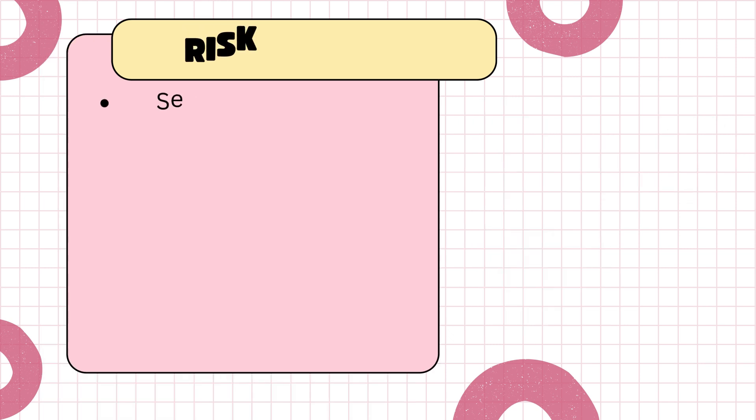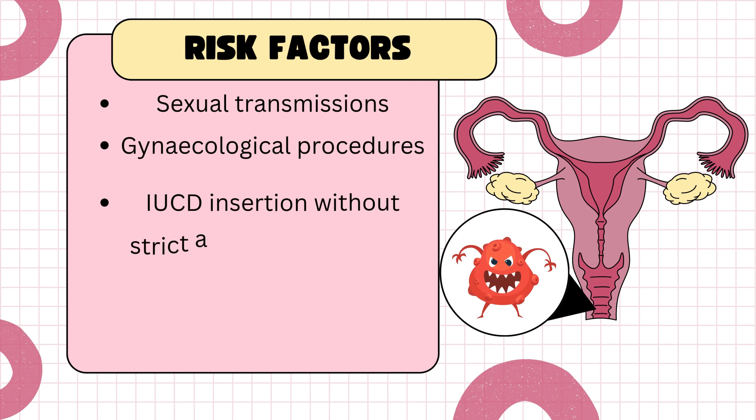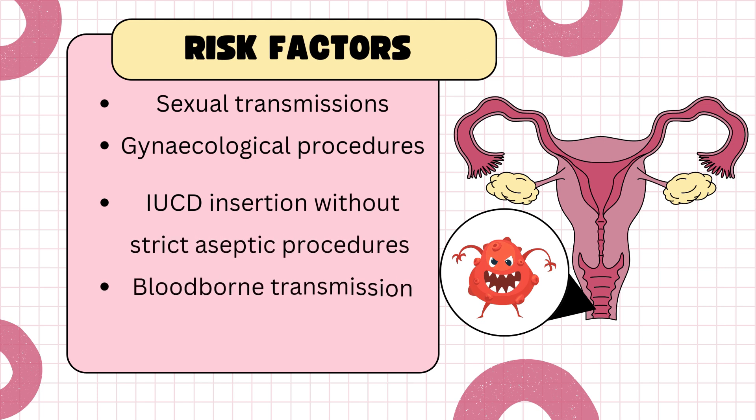Common risk factors include using antibiotics, because they can disrupt the normal vaginal flora especially the lactobacilli, which predisposes to infections like candidiasis. Sexual activity increases the risk of certain infections like trichomoniasis, which is a sexually transmitted infection. Hormonal changes — menstrual cycles, pregnancy, and menopause — can alter vaginal pH and flora. Using hygiene products, excessive douching, scented soaps, and spermicides can also irritate the vaginal lining and disrupt its natural flora.